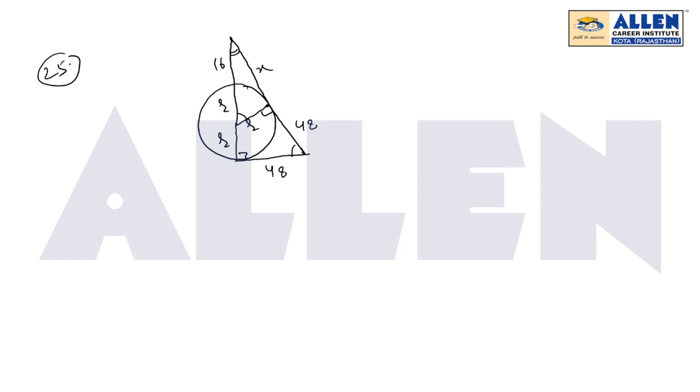So which means in these two right angle triangles two angles are same, all three angles are same basically. So which means these two triangles are similar. So we will use the similarity here.